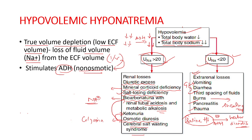An important rare cause is cerebral salt wasting syndrome, in which any intracranial disease leads to clinical hypovolemia and inappropriate natriuresis — sodium loss in the urine. Unlike other forms of hyponatremia, this is not driven by ADH-mediated water retention but by sodium loss. Intracranial diseases causing this include subarachnoid hemorrhage, traumatic brain injury, craniotomy, encephalitis, and meningitis. Distinction from SIADH is important because cerebral salt wasting responds to sodium chloride repletion, whereas SIADH does not.